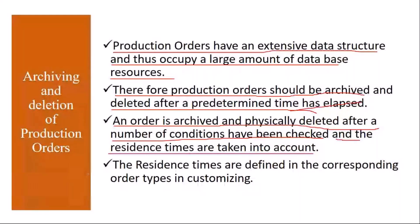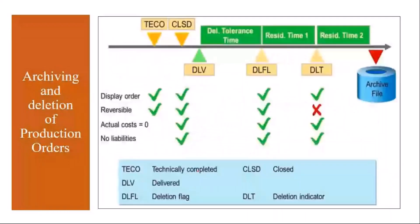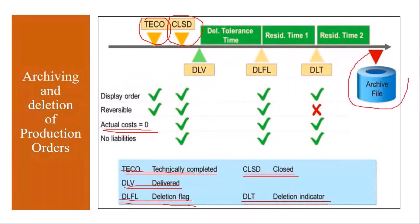Residence times are maintained in the production order type settings. In our previous sessions, we covered through closure: first we do technical completion, then finance does settlement, then they close the order. To archive and delete production orders, the order must meet these conditions: actual cost should be equal to zero, it should be technically completed, it should be closed, it should have the status delivered, and on top of that it must have the deletion flag activated and deletion indicator activated. Only then can you archive and delete the production orders.